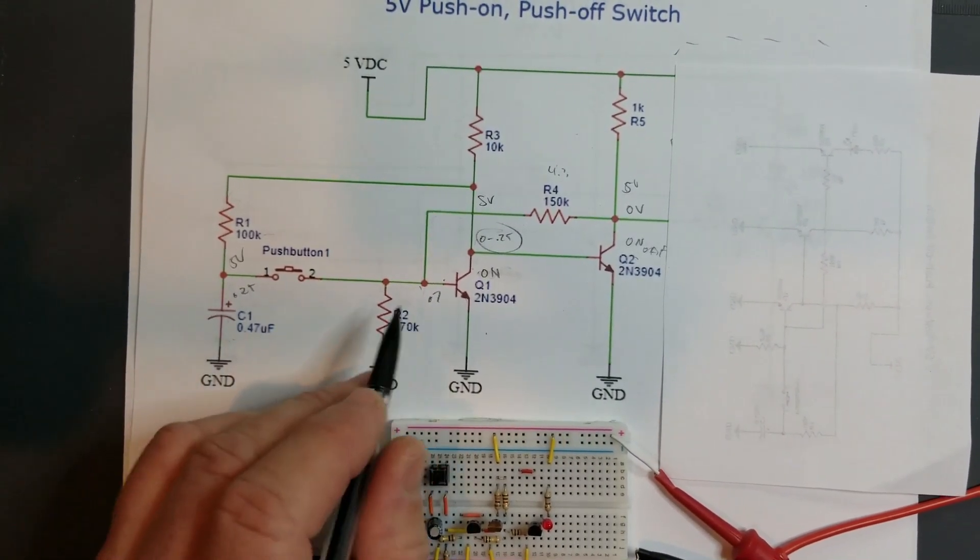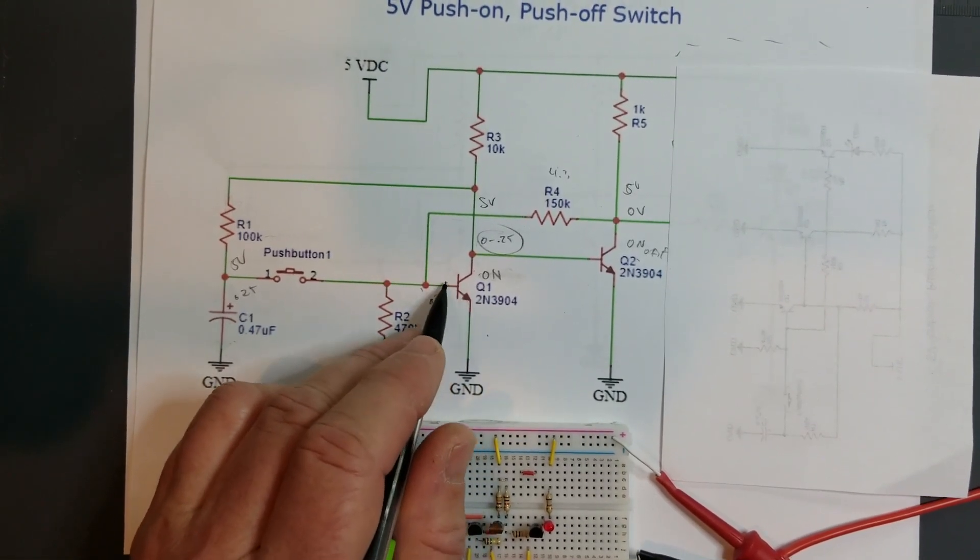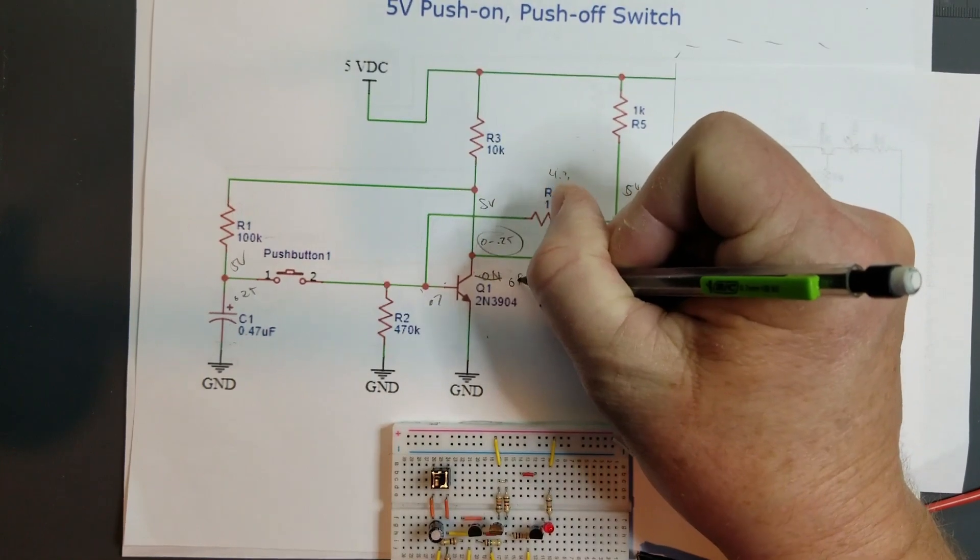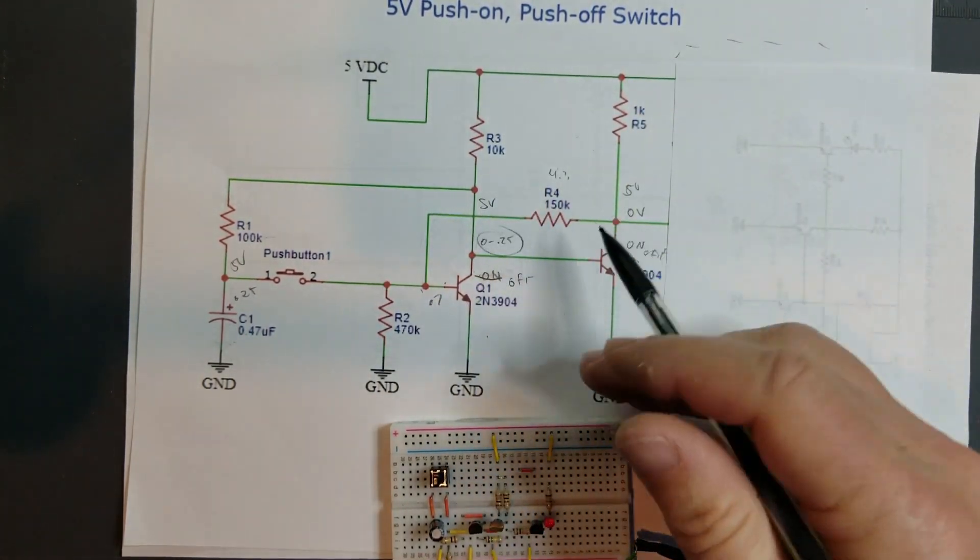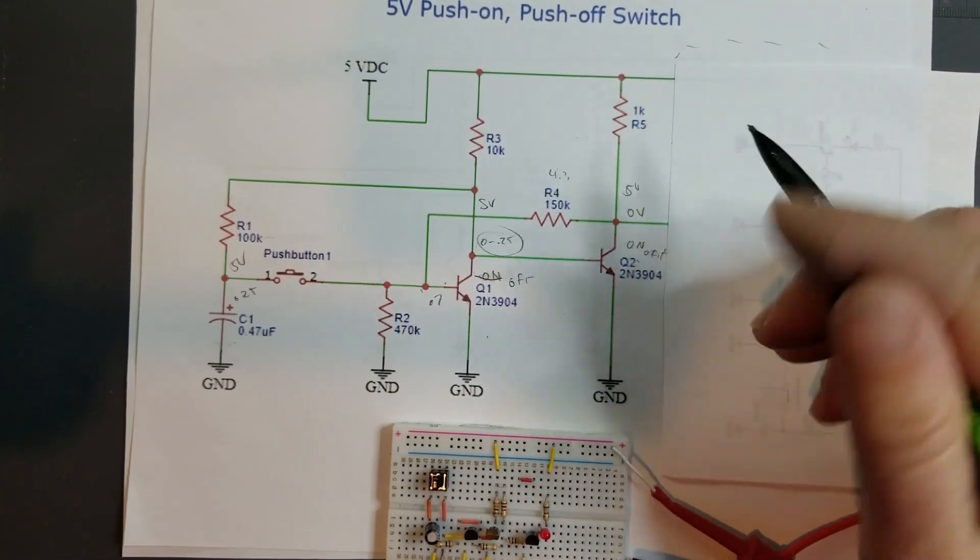Now if we're going to push it again, that 0.25 volts is going to cause this 0.7 volts to drop down to 0.25 volts just for a moment. But it's just enough to turn this transistor off. Once this transistor turns off, it's off. This voltage goes high again. It turns this transistor on.